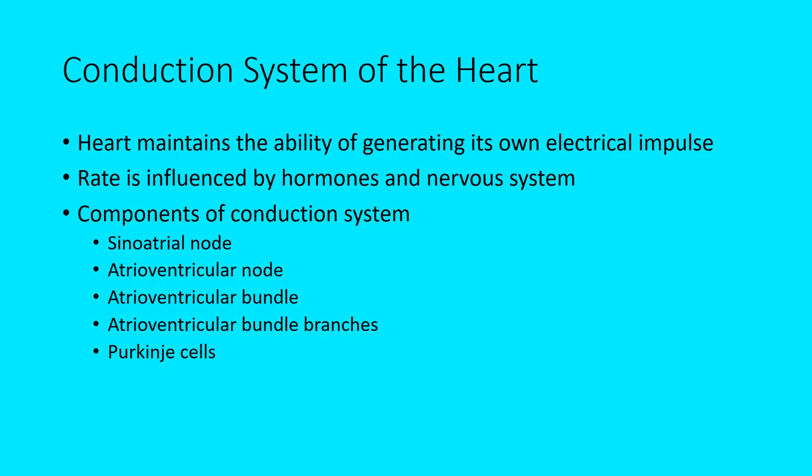The conduction system of the heart: the nervous system does not generate the electrical impulse like with muscle cells. Instead, the heart is able to generate its own electrical impulse by itself. The rate — whether it's fast or slow, whether it needs to speed up or slow down — can be influenced by the nervous system and by hormones. But the generation of the impulse is still produced by the heart's conducting cells themselves.